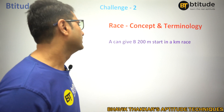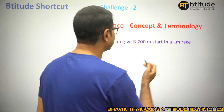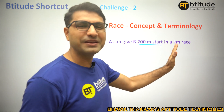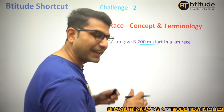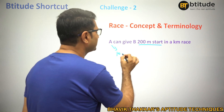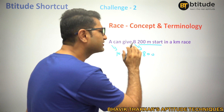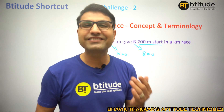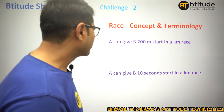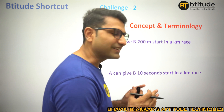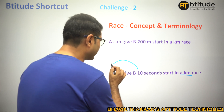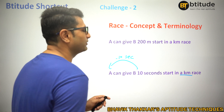'A can give me a 200 meter start in a kilometer race' also means 'A can beat me by 200 meters in a kilometer race.' The time is the same — A runs 1000 meters and B runs only 800 meters. It's just another way of giving the same information. Similarly, 'A can give B a 10 seconds start in a kilometer race' means both run a kilometer but A takes 10 seconds less.